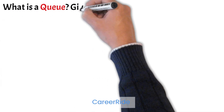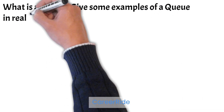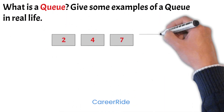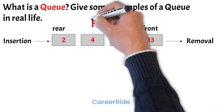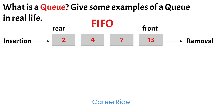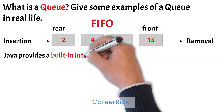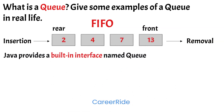Now the next question is: what is a queue? Give some examples of a queue in real life. A queue is a linear data structure in which elements are stored and accessed in a first-in-first-out manner — that is, elements are added from the rear and removed from the front. Java provides a built-in interface named Queue to provide the functionality of a queue data structure, and it extends the Collection interface. Since a queue is an interface, we cannot provide its direct implementation; we need to use a class that implements it.